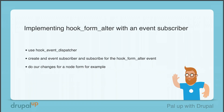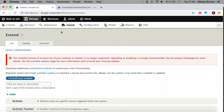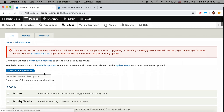In this video we are going to be implementing the hook form alter with an event subscriber. We are going to use the hook event dispatcher, create an event subscriber and subscribe for the hook form alter event, and we are going to do our changes for a node form. Here we have a Drupal instance installed and we already have the hook event dispatcher module downloaded and activated.